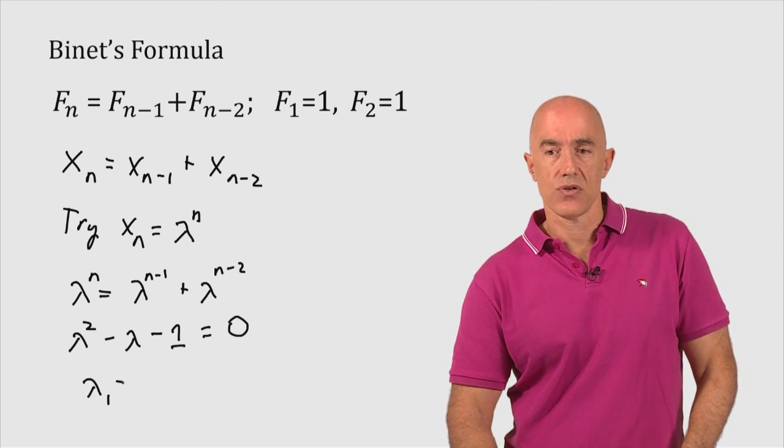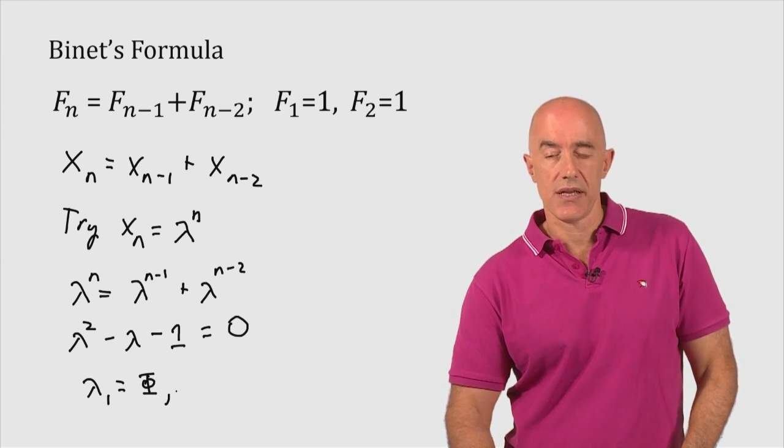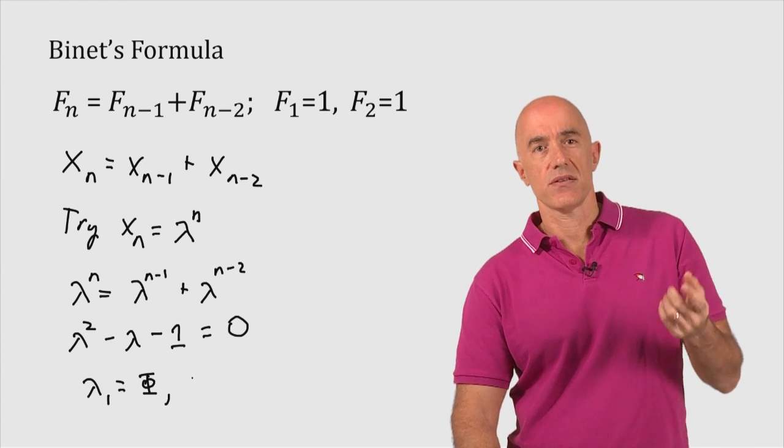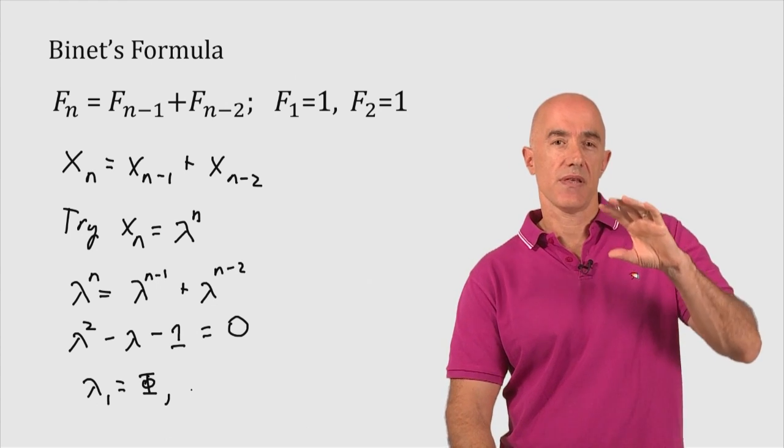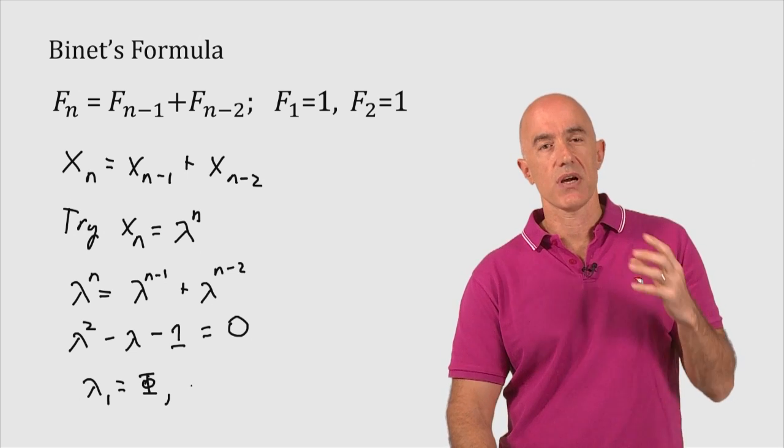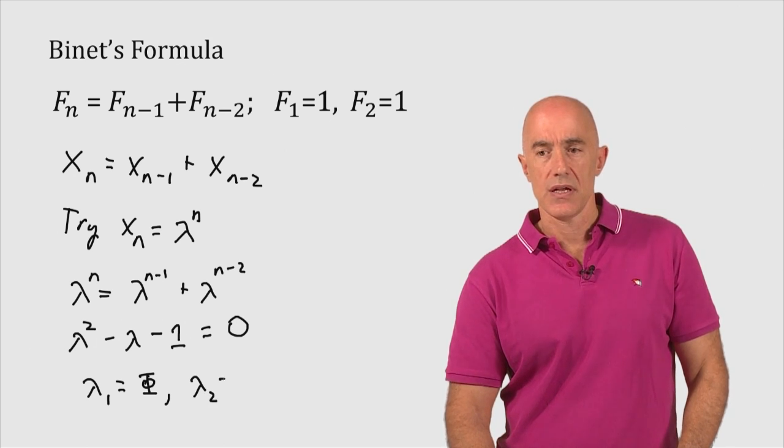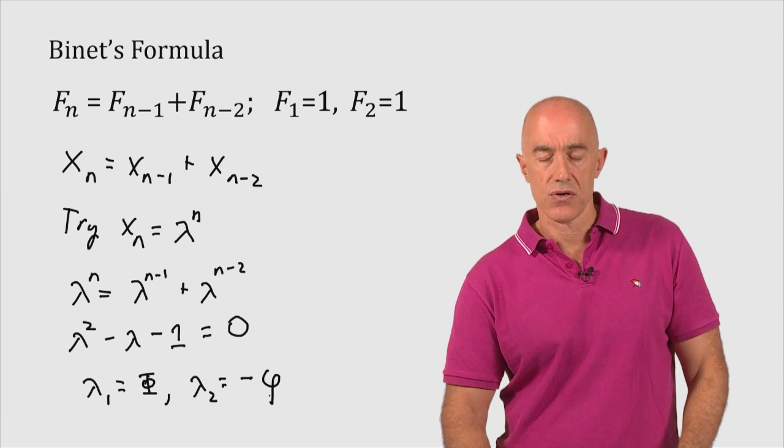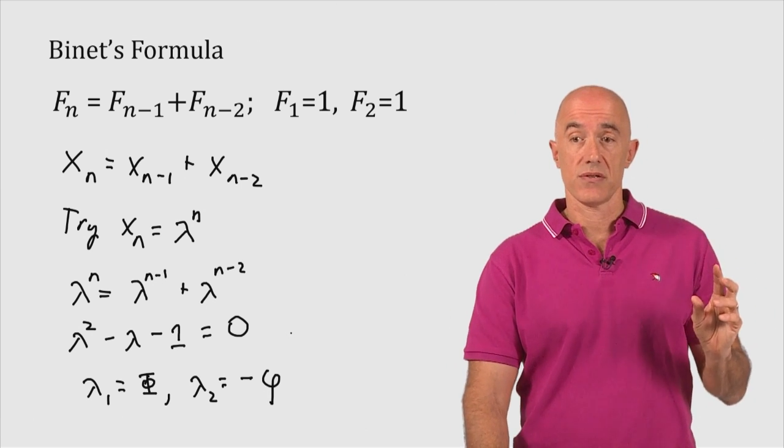One is the golden ratio. The other solution was 1 minus the square root of 5 over 2. The negative of that solution is what we call the golden ratio conjugate. So the other solution here, we'll call lambda 2, is the negative of the golden ratio conjugate. So those are our two solutions for lambda.